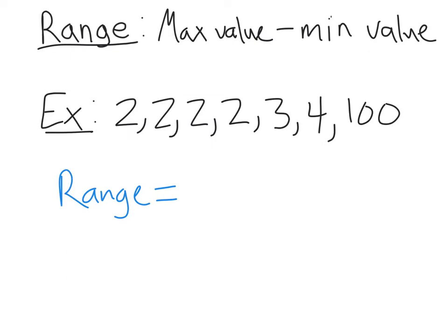So the first measure of dispersion we're going to talk about is range. And this is really simple, and unfortunately it's not that useful. But the range is simply the maximum minus the minimum value. So I have a little example here of a set of data. Got some 2's, a 3 or 4, and a 100. And if we're going to calculate the range, we're going to take the maximum value of 100, subtract off the minimum value 2, and get 98. That is the range of this data.